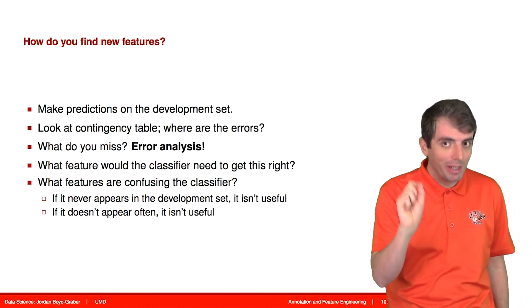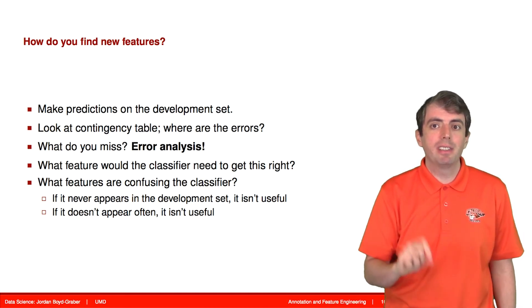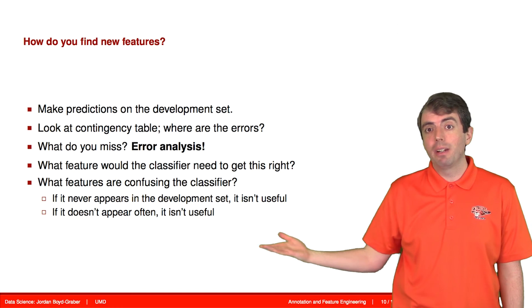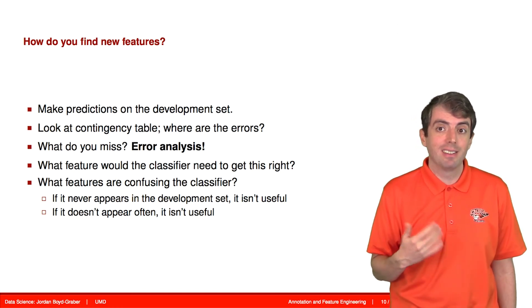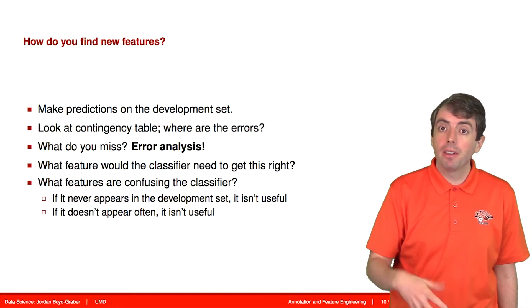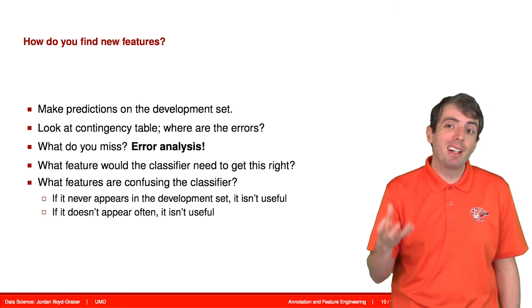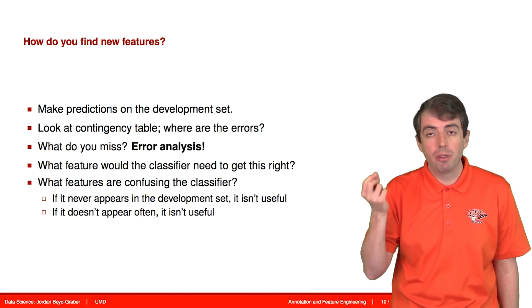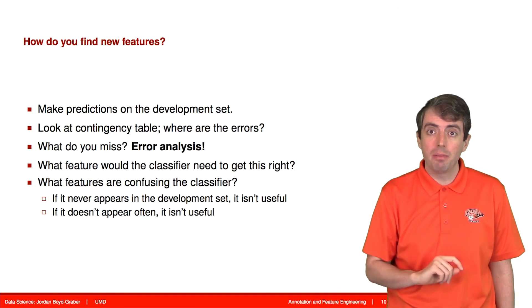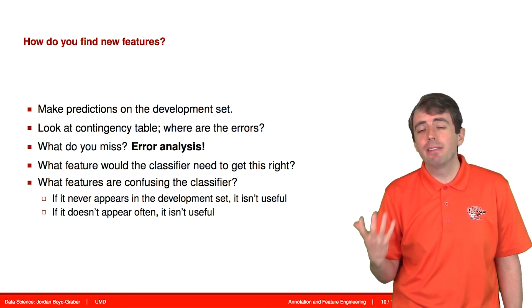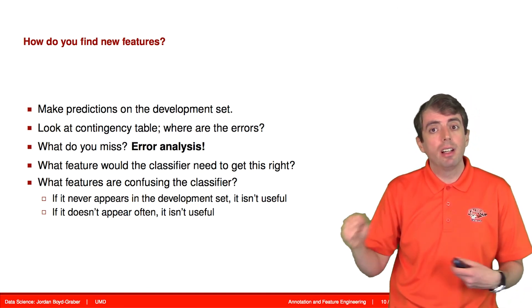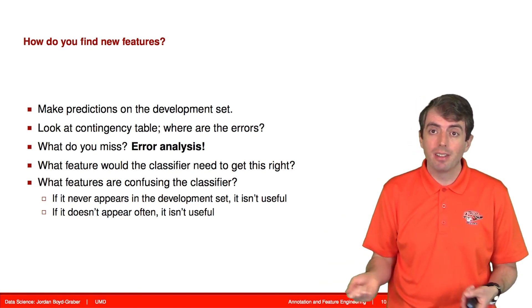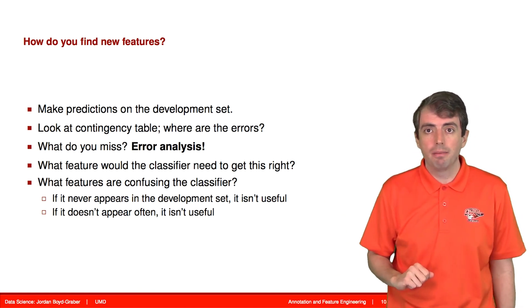It's really important that you only do error analysis on your development set. If you do it on your test set, you're cheating, and the final numbers you get won't reflect reality. It's also important that you look for features that appear often. If you only capture something that covers one single data point, that won't help you. You need to find features that will touch a lot of data points — otherwise you'll need to create tens of thousands of features, and that's not a good use of your time.